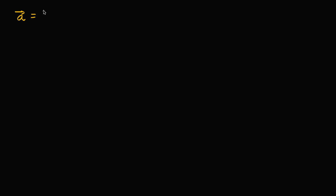So if they said vector A is equal to five comma negative three, this means that its x component is positive five and its y component is negative three.